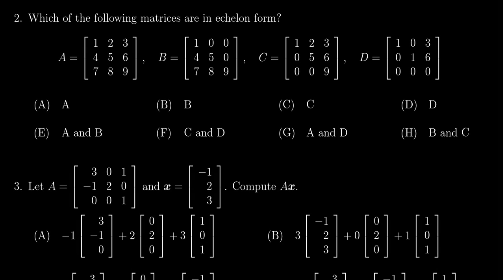In this video, we will provide the solution to question 2 for exam 1 for Math 2270. We are asked which of the following matrices are in echelon form. Let's first look at matrix A. Because this is a non-zero matrix, we look at the first non-zero column, which is just the first column itself, so there would be a pivot in the first column. But because there are non-zero values below the pivot, this matrix is not in echelon form.